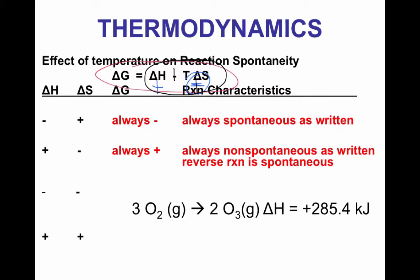Because T always has to be in Kelvin, there are no negative temperatures. So when you have an endothermic reaction and an increase in order, it will always be non-spontaneous at any temperature. We can consider the formation of ozone from oxygen as an example. Delta H is positive, and we can see that we go from 3 moles of gas to 2 moles of gas, so delta S is going to be negative. We don't need an actual value for delta S — if you have the signs of each, you can always tell when it's spontaneous or non-spontaneous.